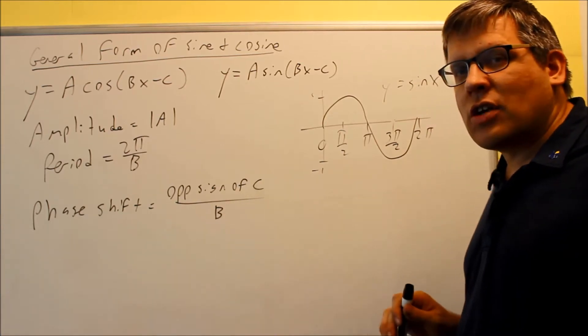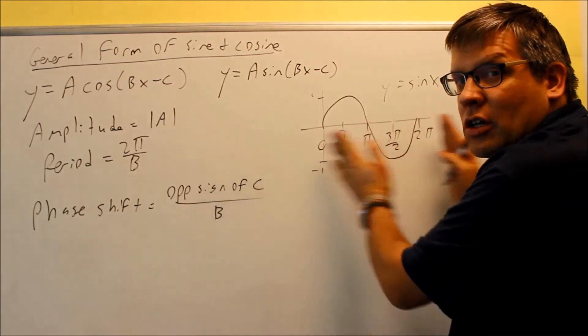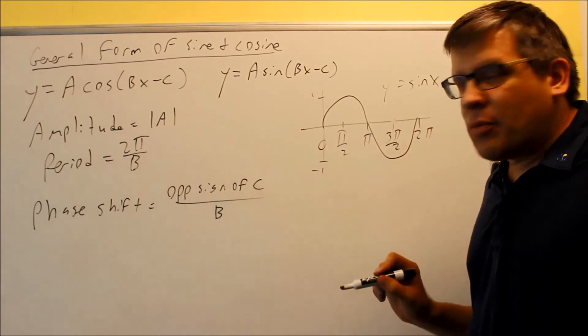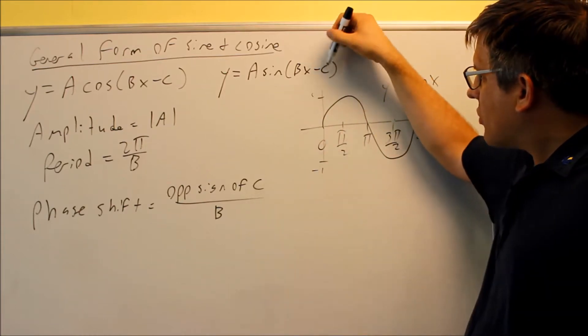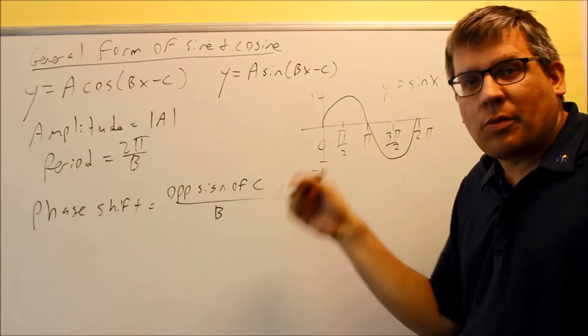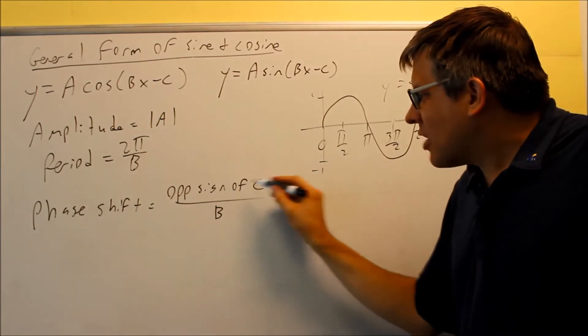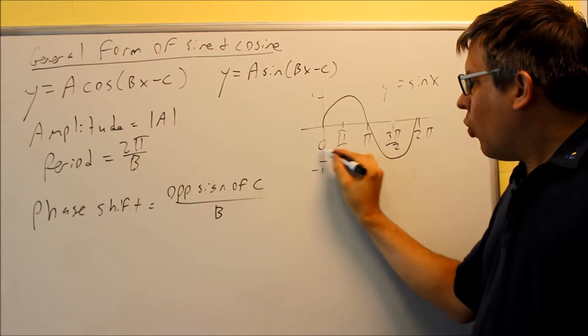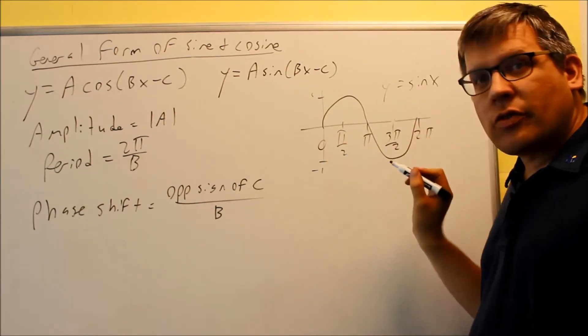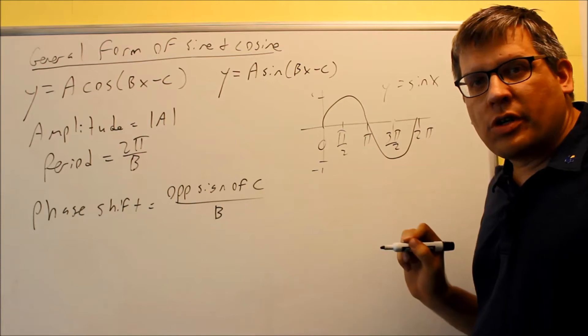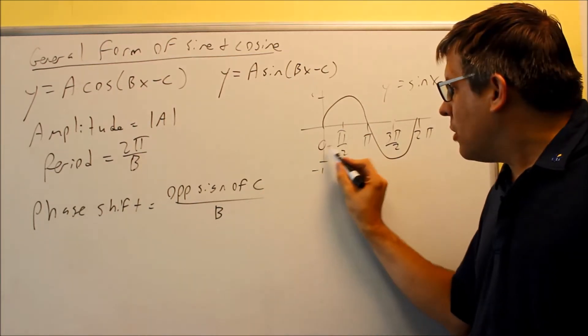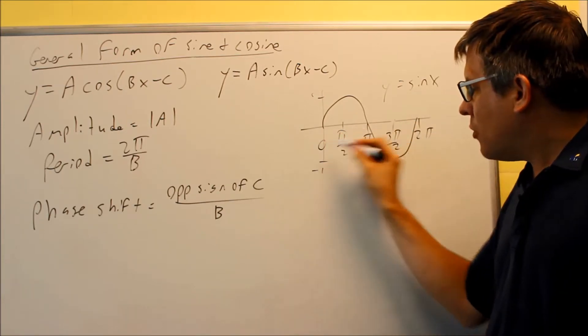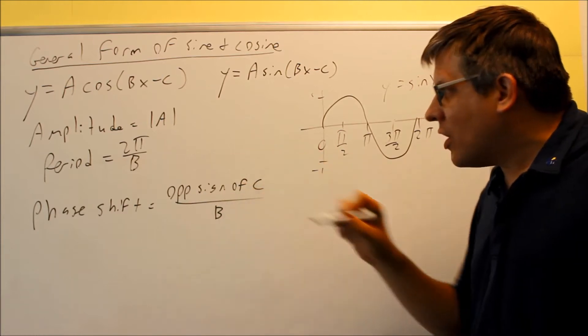I also have a phase shift. Phase shift would be taking the graph and moving it left and right. You find that by taking the opposite sign of C over B. So in other words, if you've got a minus sign in the formula, we're going to take the positive version, opposite sign of C, and we're going to do that over B. The phase shift will actually tell you what the beginning part of the graph is. On this graph I drew of sine, the starting point would be 0. The phase shift might be moved over to the left or to the right, and that starting point would be the phase shift.